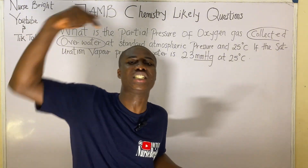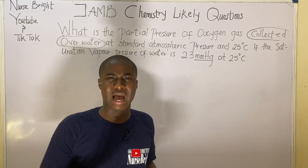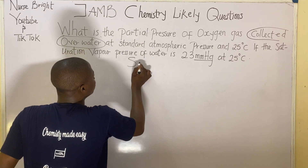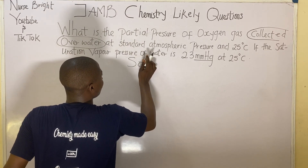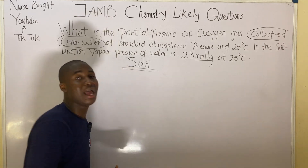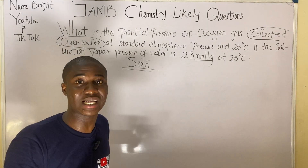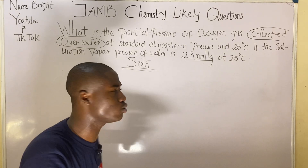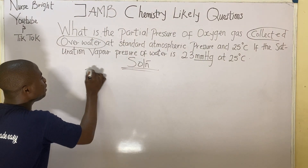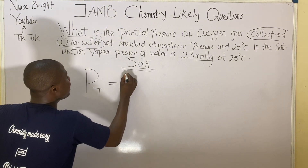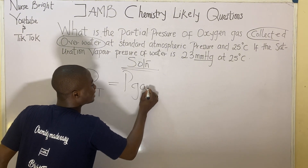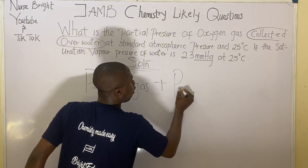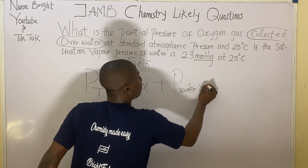Whenever you are solving any question in the JAMB exam and you see the phrase 'collected over water', there is a specific formula you must use, and that formula is: PT = P_gas + P_water_vapor.